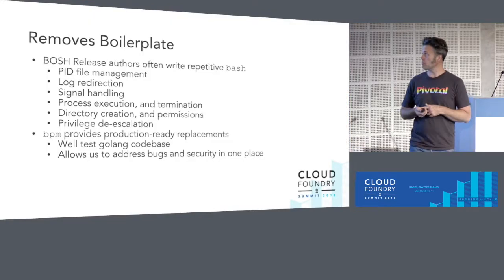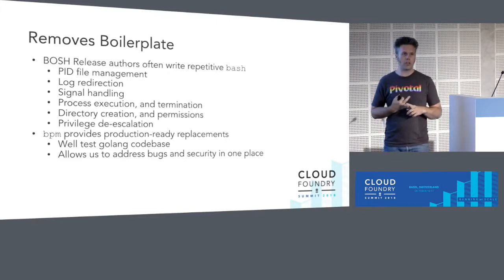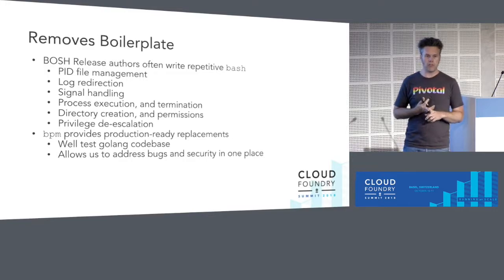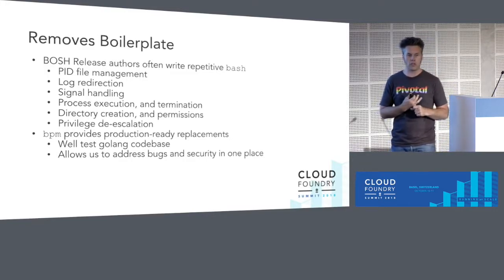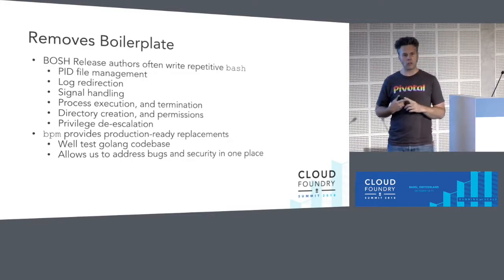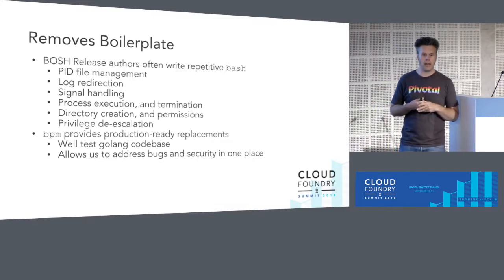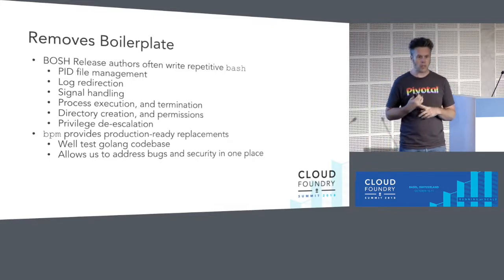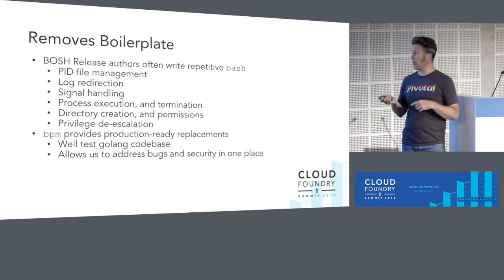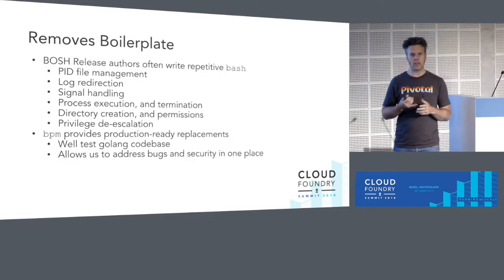Why should you use BPM? It removes a lot of boilerplate that developers have been either cutting their teeth on or copying and pasting from other releases — things like PID file management, log redirection, signal handling, process execution and termination, directory creation, permissions setting, and privilege de-escalation. Some of the older releases like Diego had hundreds of lines of bash that have been removed by adding BPM. It provides a production-ready replacement that is well-tested in a Golang codebase and allows us to address bugs and security issues in a single place rather than replicating fixes across tens of Bosch releases.